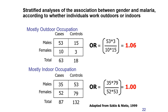We performed a stratified analysis — calculating separate odds ratios between gender and malaria among those with mostly outdoor occupation and those with mostly indoor occupation. After stratification by occupation, there was no longer an association between gender and developing malaria — both stratum-specific odds ratios were very close to one. Pooling was possible since they were similar across strata, but there was no practical need since both were close to one.